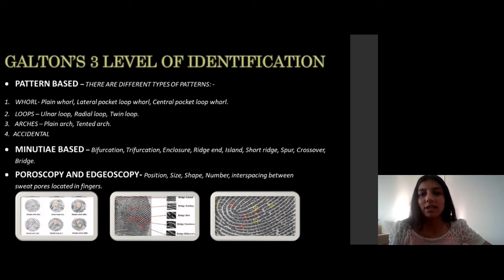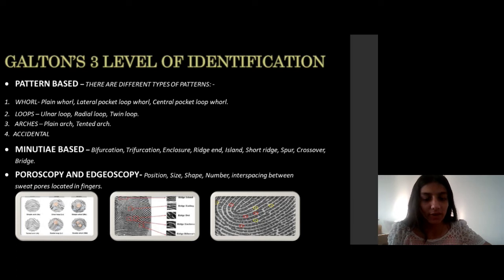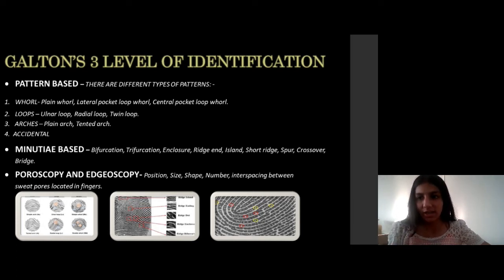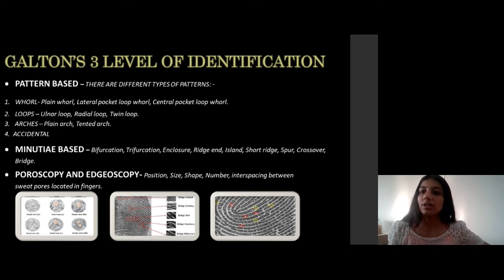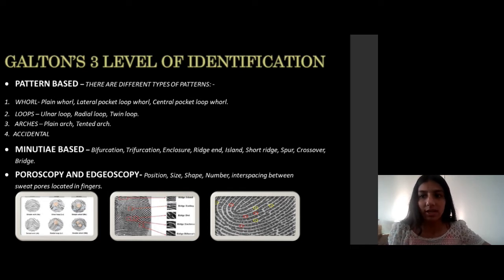Now, Galton's three levels of identification. Galton set three levels of identification for any person's individuality. The first level was pattern-based. A human finger has different patterns like whorls, loops, arches, and accidental patterns.